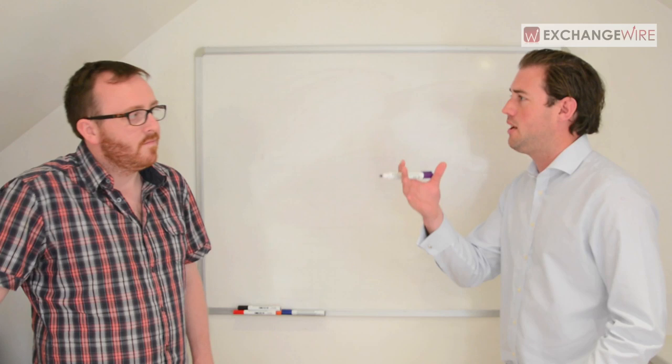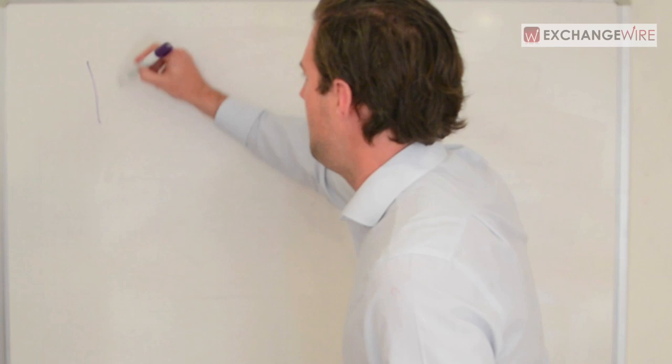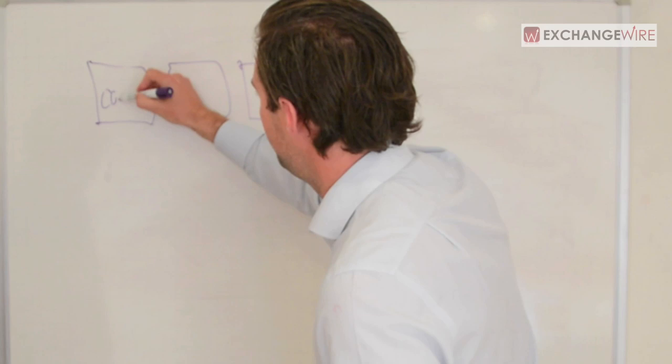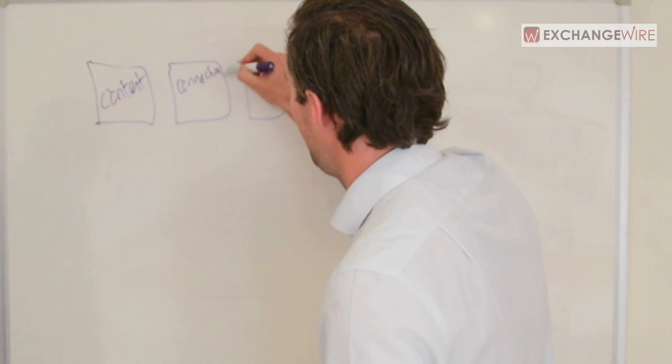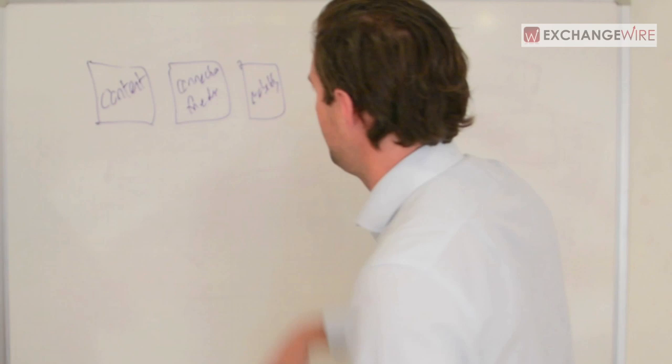So the first thing that we built with Effective three years ago was the DMP side because we knew that the data was the most important aspect of our business and the future of programmatic. So what we did was we looked at what interesting data is going to be for us. We can kind of broadly break down our web usage into three boxes.